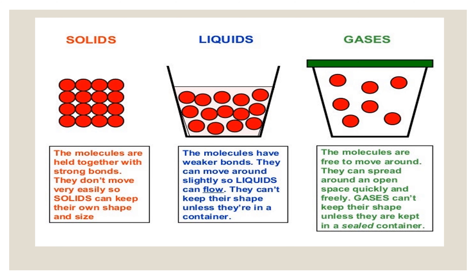These figures show how molecules are arranged. In solid, molecules are held together with a strong bond and don't move very easily, so solid keeps its own shape and size. In liquid, molecules have a weaker bond and can move around slightly, so liquid can flow but can't keep its shape unless it is in a container. In gas, molecules are free to move around and spread out quickly and freely, so gases can't keep their shape unless kept in a sealed container.